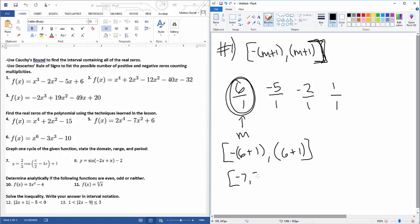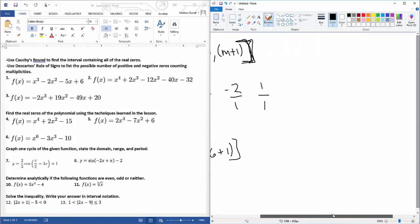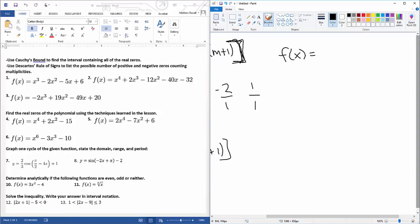So all those zeros are going to be between negative seven and positive seven. Then the next piece says use Descartes' rule of signs to list the number of possible positive and negative zeros. So we look at two situations: f of positive x for the positive zeros, and then f of negative x for the negative zeros.